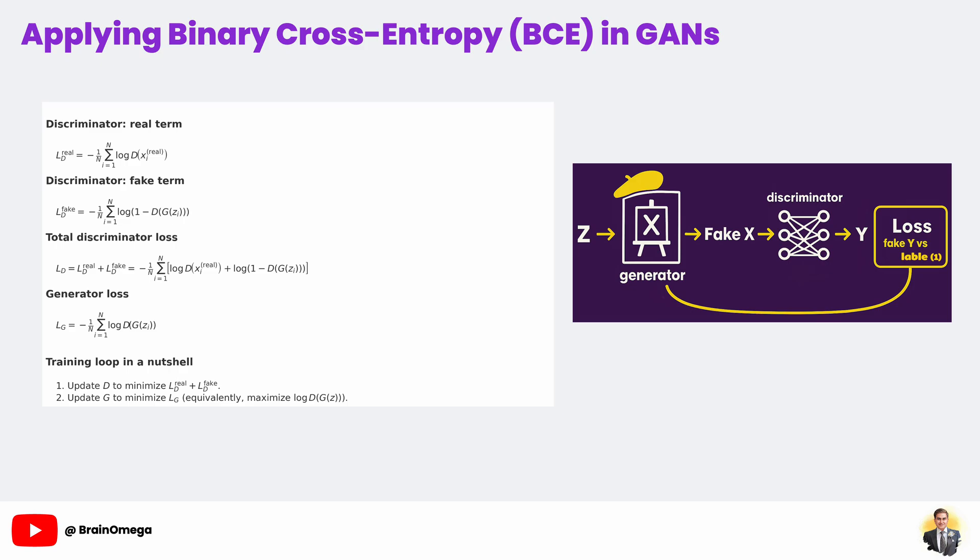Finally, training proceeds in an alternating 3-step loop each iteration. Step 1 is the discriminator real step: draw a batch of real examples, feed them to the discriminator, and update the discriminator to maximize the log probability it assigns to real data. Step 2 is the discriminator fake step: draw a batch of latent vectors, generate fake images, feed them to the discriminator, and update the discriminator to minimize the log probability it assigns to fake data. Step 3 is the generator step: draw another batch of latent vectors, generate images, and update the generator to minimize the negative log probability that the discriminator assigns to those images, which is equivalent to maximizing that same log probability. Alternating these updates sets up a dynamic minimax game. The discriminator continuously sharpens its ability to spot fakes, while the generator learns to fool it ever more effectively. It is this elegant tug-of-war, powered by binary cross-entropy, that drives GANs to produce increasingly realistic data with each epoch. Thank you very much.